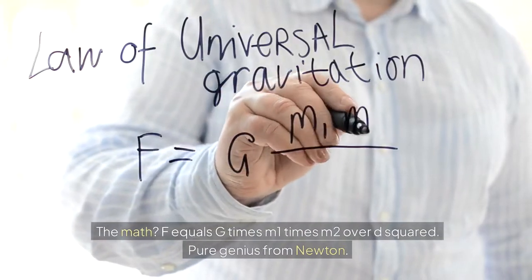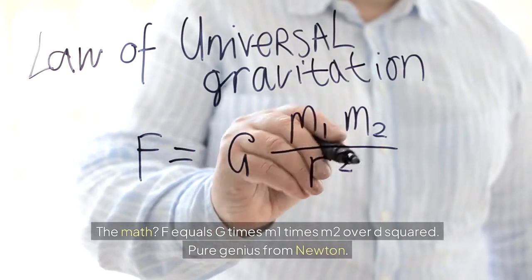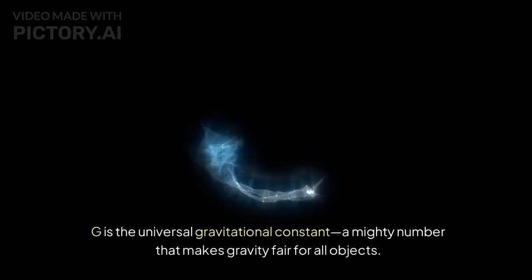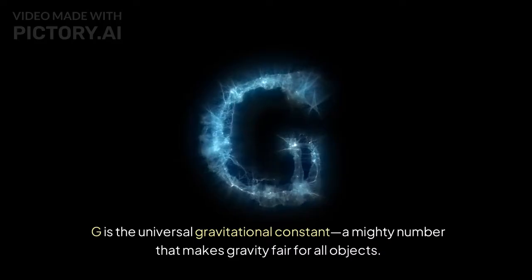The math? F equals G times M1 times M2 over D squared. Pure genius from Newton. G is the universal gravitational constant, a mighty number that makes gravity fair for all objects.